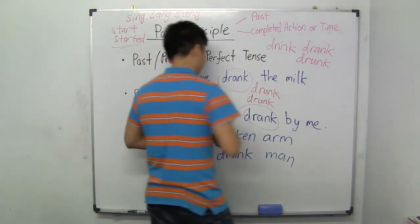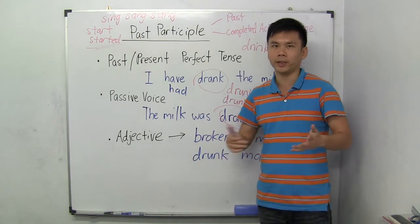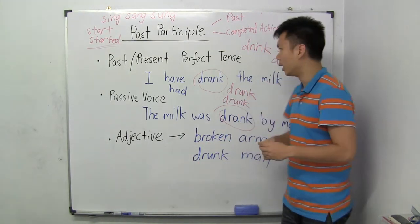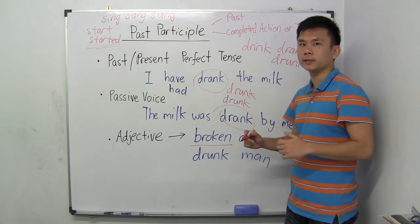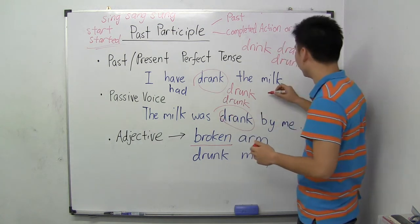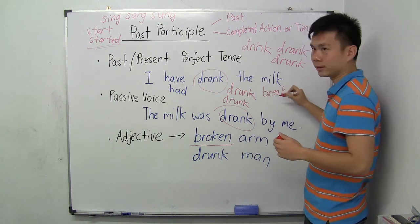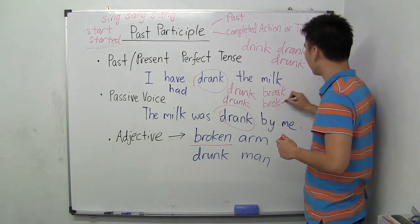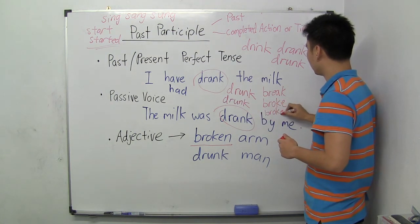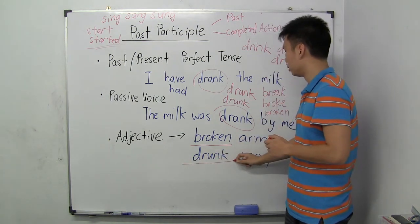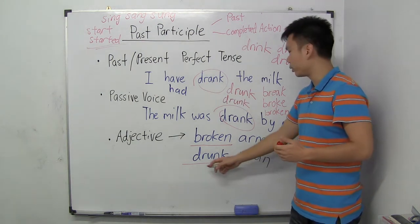We also need to know that the past participle can be used as an adjective. Here are some common ones, like 'broken.' To recap: 'broken' comes from the word 'break,' which is present tense; past tense would be 'broke'; and the past participle is 'broken.' Same for 'drunk' — we use it as a verb in 'have drunk,' but when we say 'the drunk man,' we use it as an adjective.